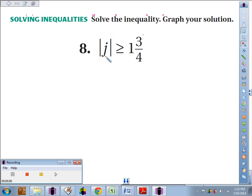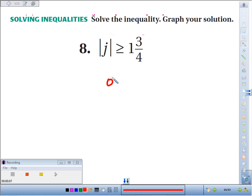Number 8, solve the inequality: Absolute value of j is greater than or equal to 1 and 3 fourths. So imagine here is 0. You want to be more than 1 and 3 fourths miles from home.